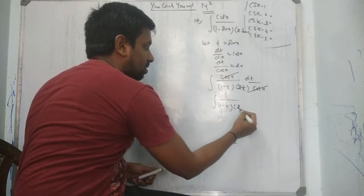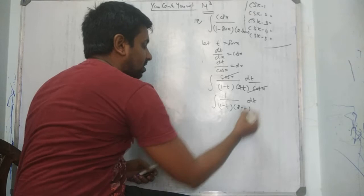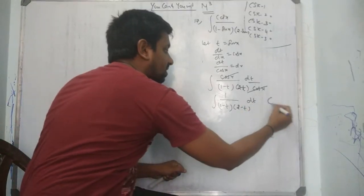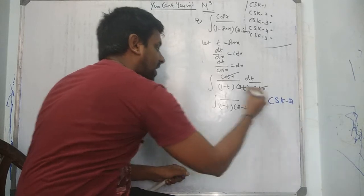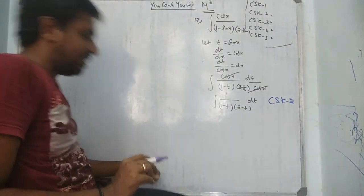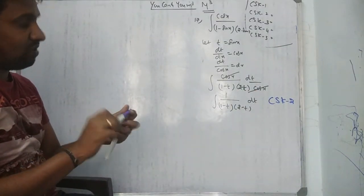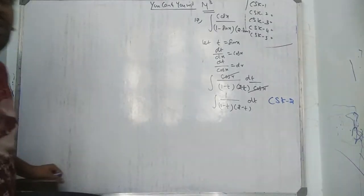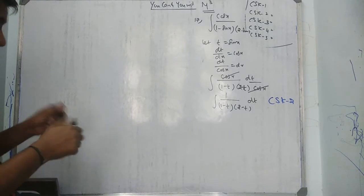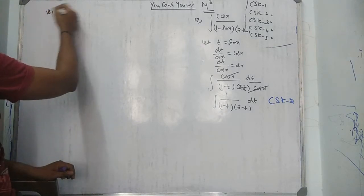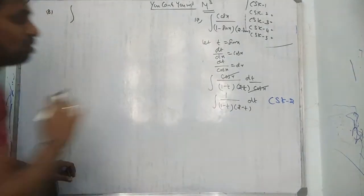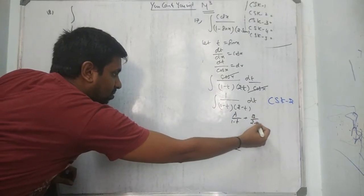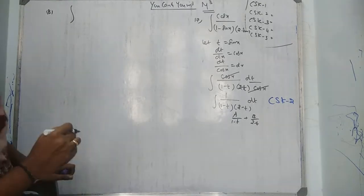Therefore we get 1 over (1 minus t)(2 minus t) dt. This denominator has 2 brackets, so this is CSK2. Now write A over (1 minus t) plus B over (2 minus t) and you can easily finish it off. Questions 18 and 19 use the same method — A over (1 minus t) plus B over (2 minus t), normal method.